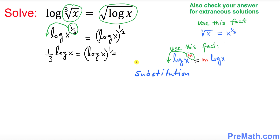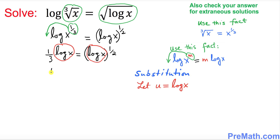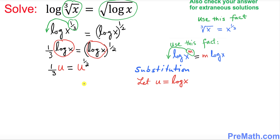The next step is substitution. We want to make this equation much simpler by looking at log of x on this side and log of x on this side. I'm going to let u equal to log of x and replace log of x with u. So this turns out to be: 1 over 3 times u equals u power 1 over 2. I just made a substitution right up here.